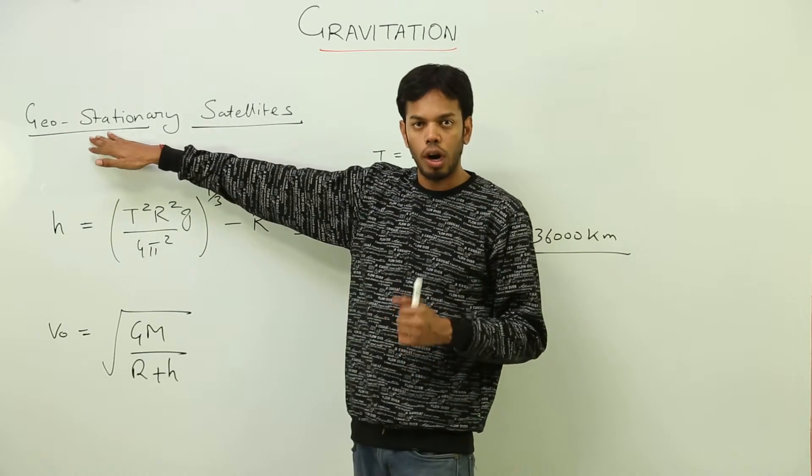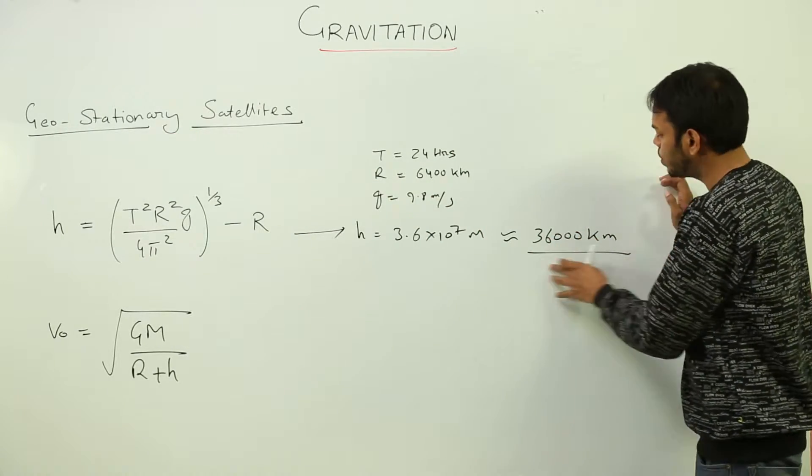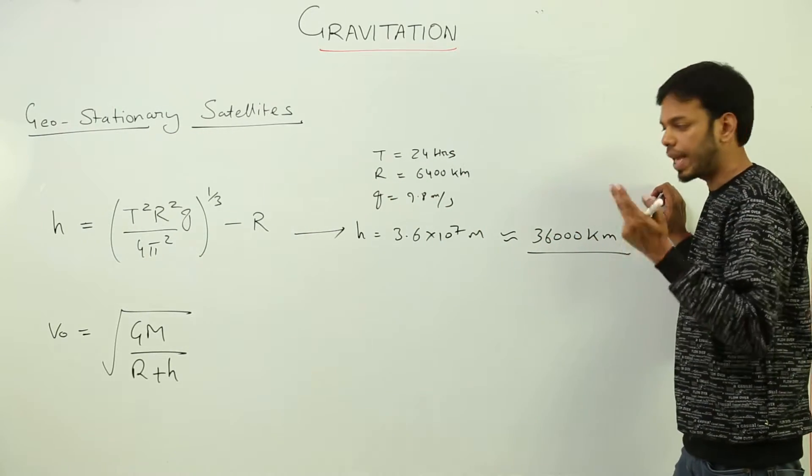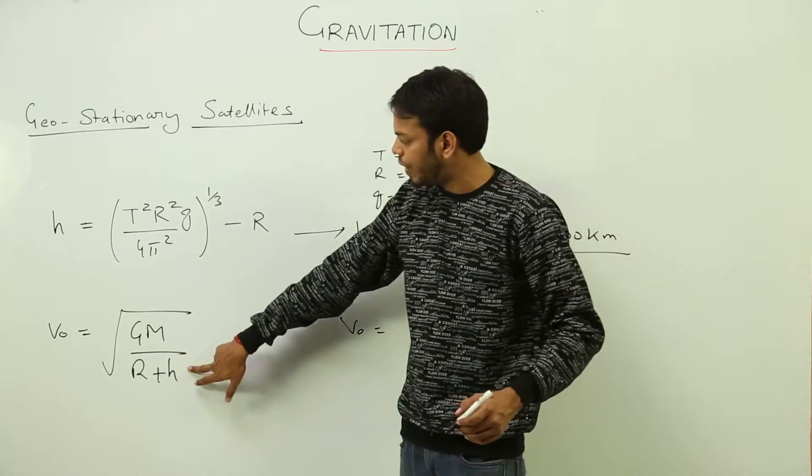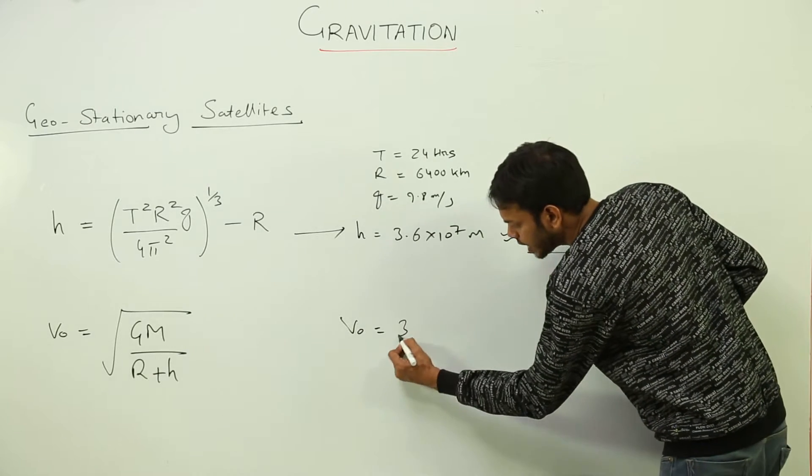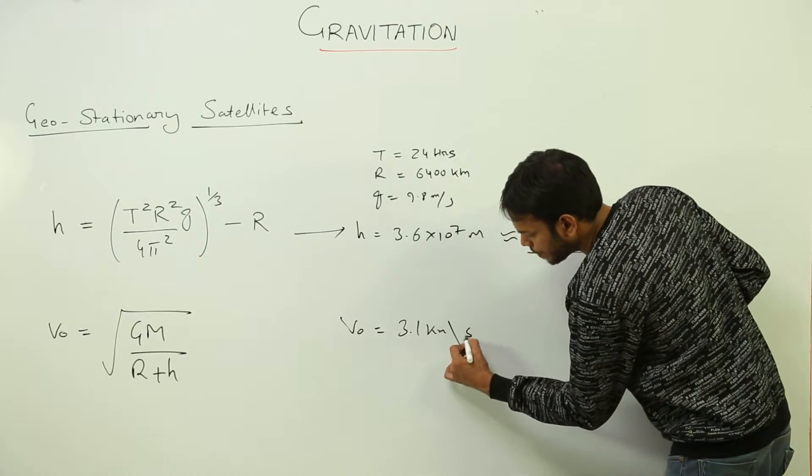As well as the orbital velocity - if I put this value of h in this formula, I'll get 3.1 kilometers per second. So this is the minimum orbital velocity at which a geostationary satellite would be orbiting the Earth.